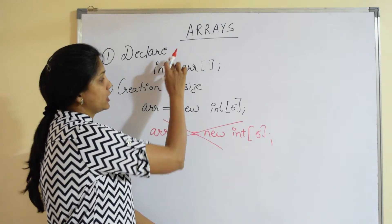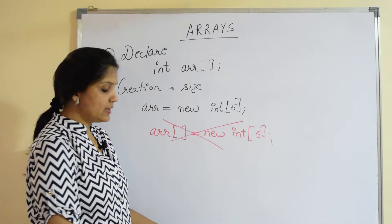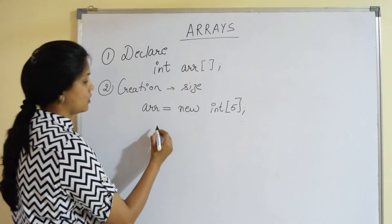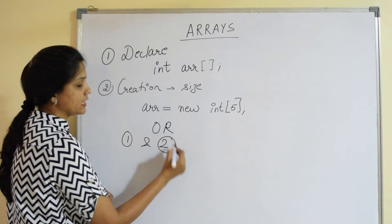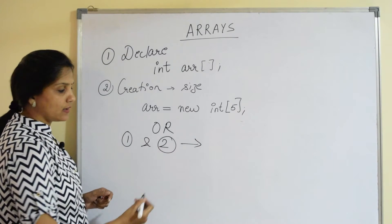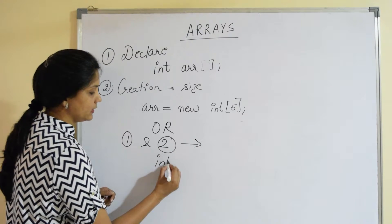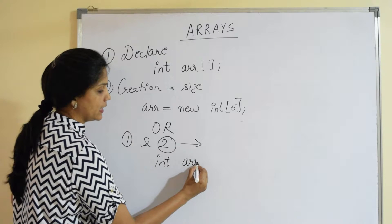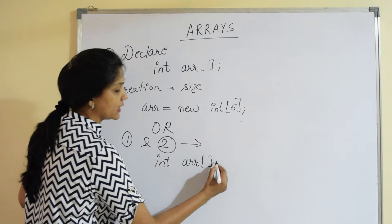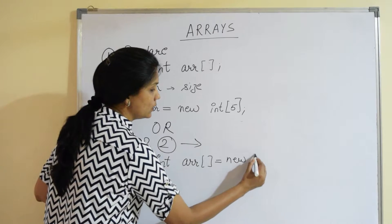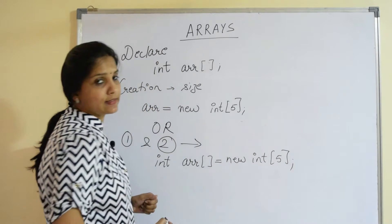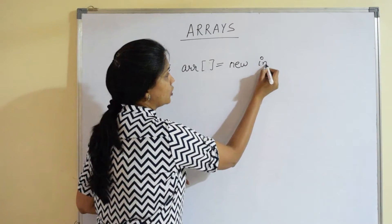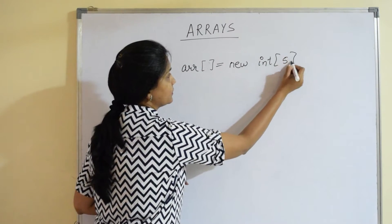In case you want to write both the steps in one line, it is allowed. Or I can combine step one and step two in one line. I can say int followed by the variable name followed by the square brackets equals new int and initialize with the size. We have already seen this syntax.